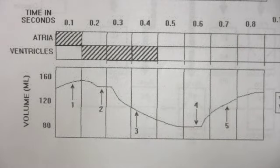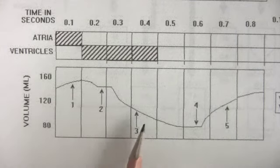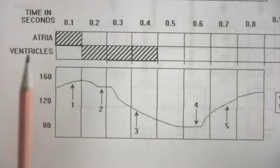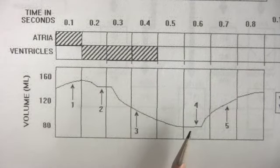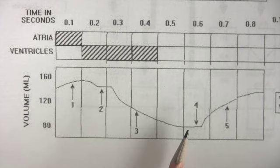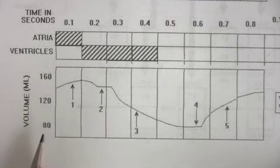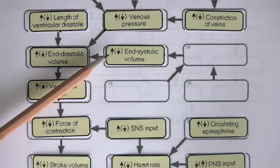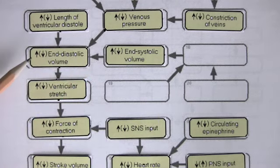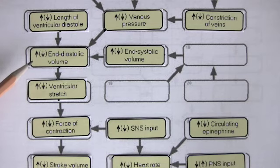End-systolic volume is the volume of blood in the ventricles at the end of systole. End-systolic volume occurs slightly after the end of ventricular systole. It's the point at which the volume reaches its lowest. Let's say end-systolic volume is around 80 milliliters. Let's say end-diastolic volume is around 160 milliliters. If you increase end-systolic volume, this would lead to an increase in end-diastolic volume.